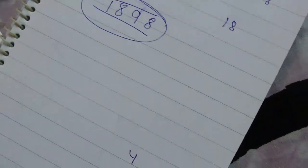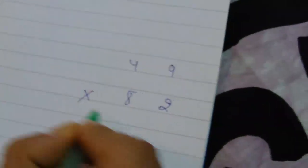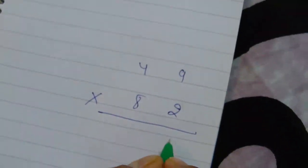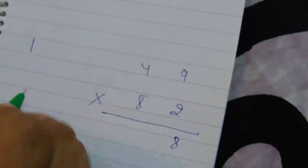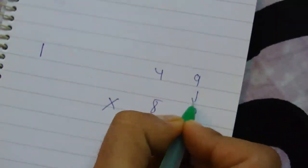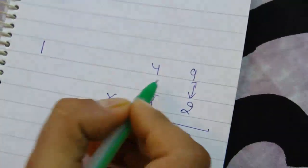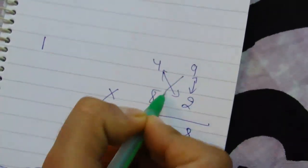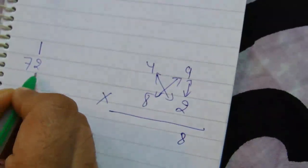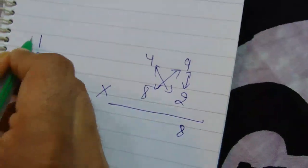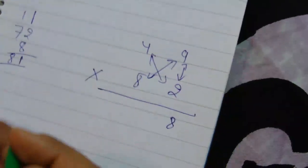Here's another example. We have to multiply two numbers: 9 times 2 equals 18. We write 8 and carry 1. We've done the first step. Now we cross the numbers, which is very easy: 9 times 2 equals 72, and 4 times 8 equals... so 81. We write 1 there and carry 8.